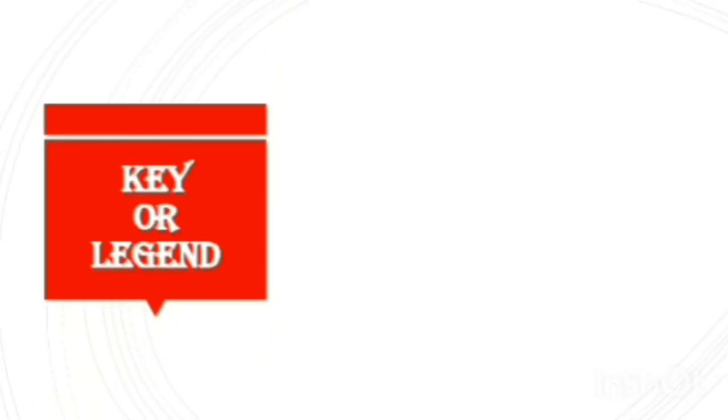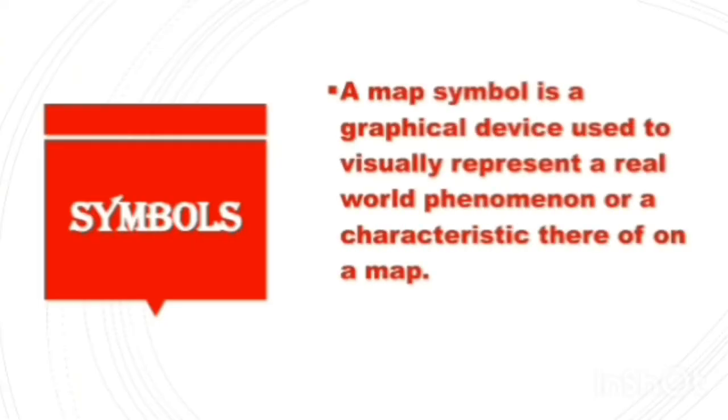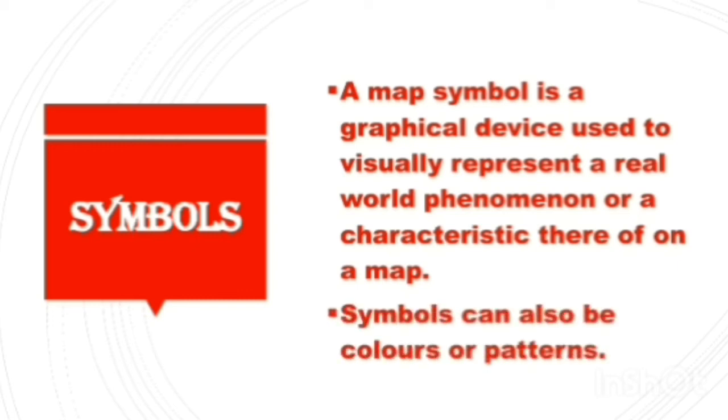Next, observe this map. The keys are given at the bottom of the map. Symbols: A map symbol is a graphical device used to visually represent a real-world phenomenon or a characteristic thereof on a map. Symbols can also be colors or patterns.